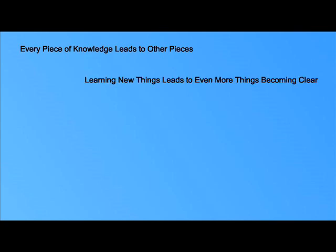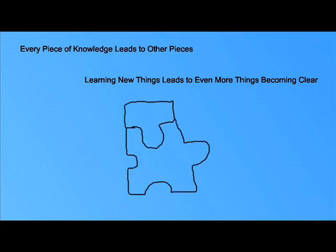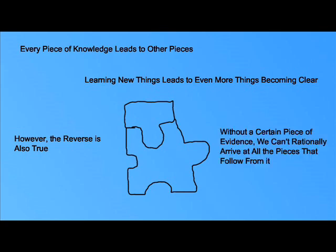Here's the problem. Every piece of knowledge we gain leads to other pieces of knowledge. As we learn new things, even more things become clear. One clue leads to another, one piece of evidence to another piece. However, the reverse is also true. Without a certain piece of evidence, we can't rationally arrive at all the pieces of evidence that follow from it.